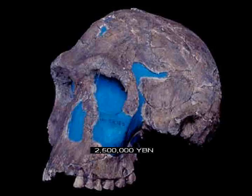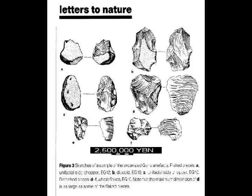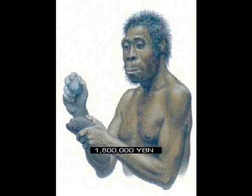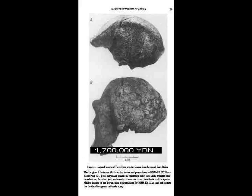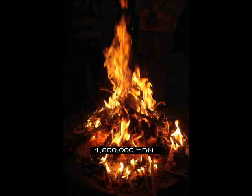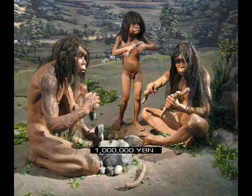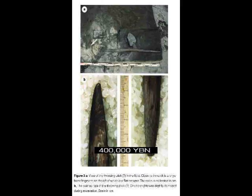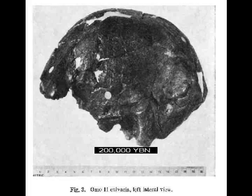Ardipithecus. Earliest bipedal primate. Homo habilis. The human brain starts getting bigger. Stone tools. Homo erectus. Erectus moves into Eurasia. Controlled use of fire. Erectus evolves less body hair. Hominids wear clothing. Spear. Humans. Homo sapiens.